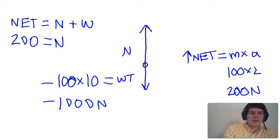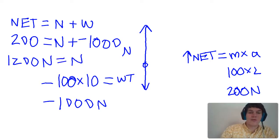We don't know the normal force, and the weight is negative 1,000. If we add 1,000 to both sides, we get 1,200 newtons being equal to the normal force.